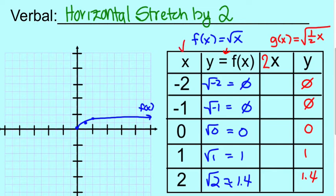Now, these values we're going to multiply by 2. So 2 times negative 2 is negative 4. 2 times negative 1 is negative 2. 2 times 0 is 0. 2 times 1 is 2. 2 times 1.4 is 2.8.